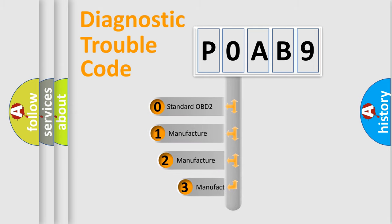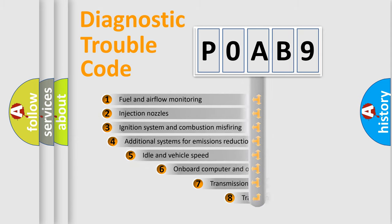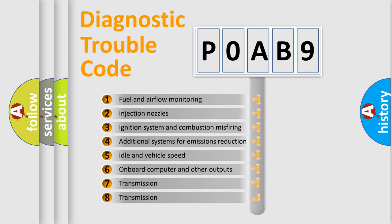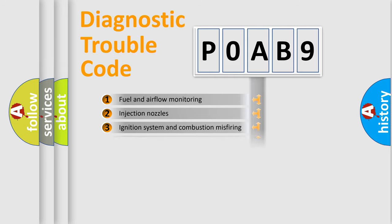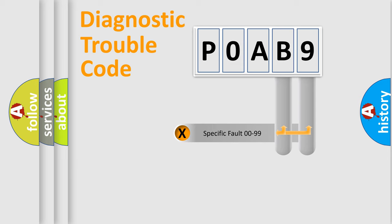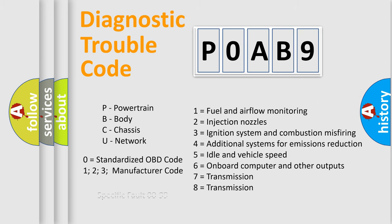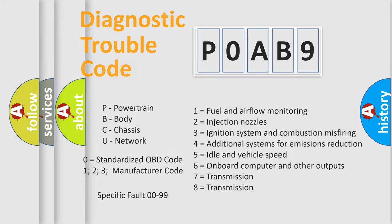If the second character is expressed as zero, it is a standardized error. In the case of numbers 1, 2, or 3, it is a more specific expression of a car-specific error. The third character specifies a subset of errors. This division is valid only for the standardized DTC code, where only the last two characters define the specific fault of the group — and only when the second character is expressed by the number zero.